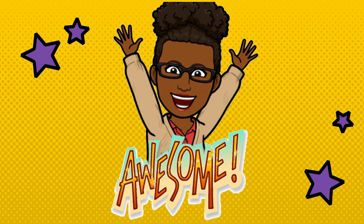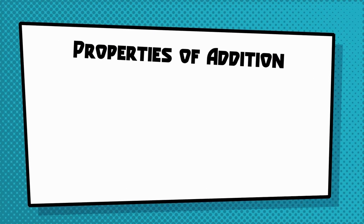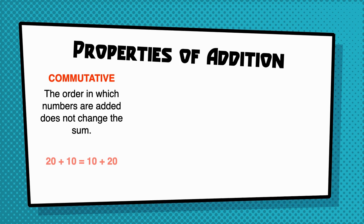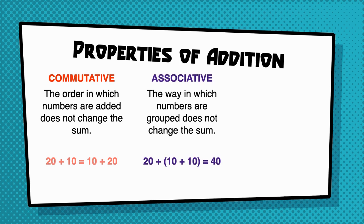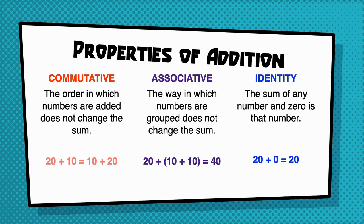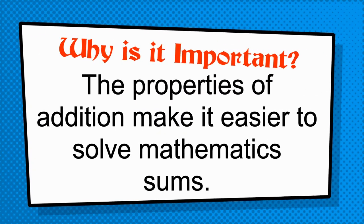I think you've got this. Let's review our addition properties. There are three properties of addition that we focused on today. The commutative property says that the order in which numbers are added does not change the sum. The associative property says that the way in which numbers are grouped does not change the sum. And the identity property says that the sum of any number and zero is that number. The properties of addition make it easier to solve mathematics sums, making our mathematics life much, much easier.